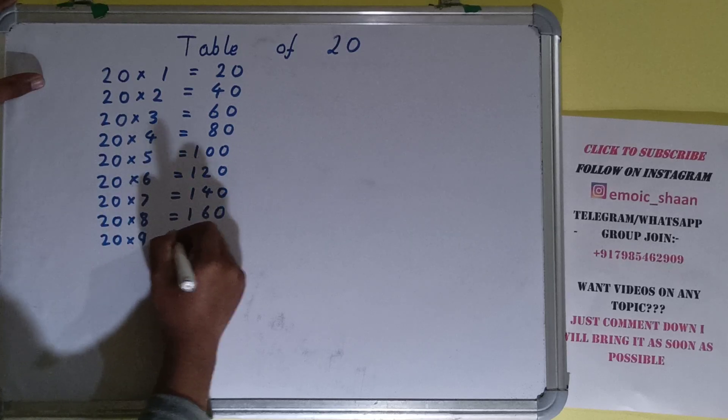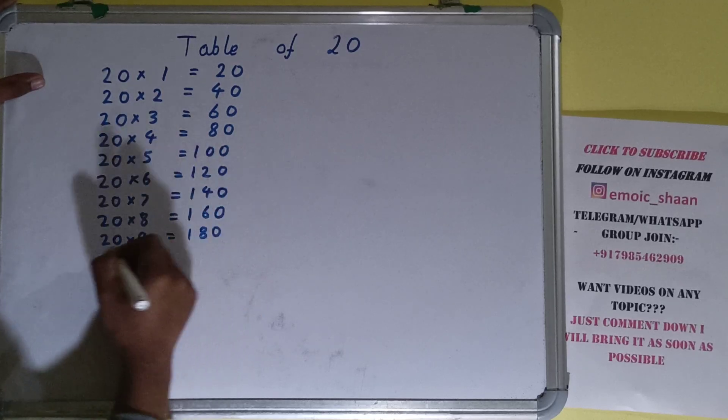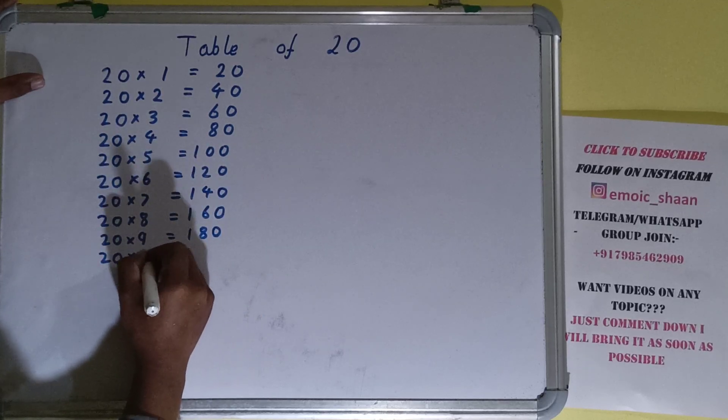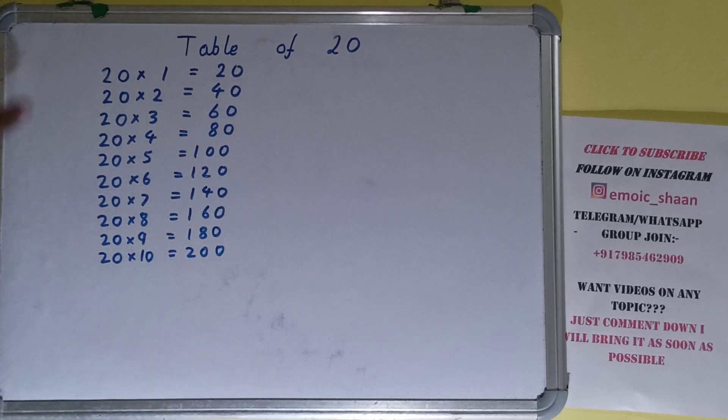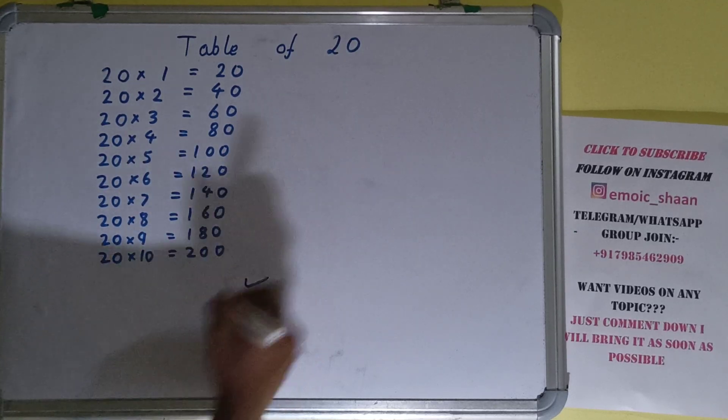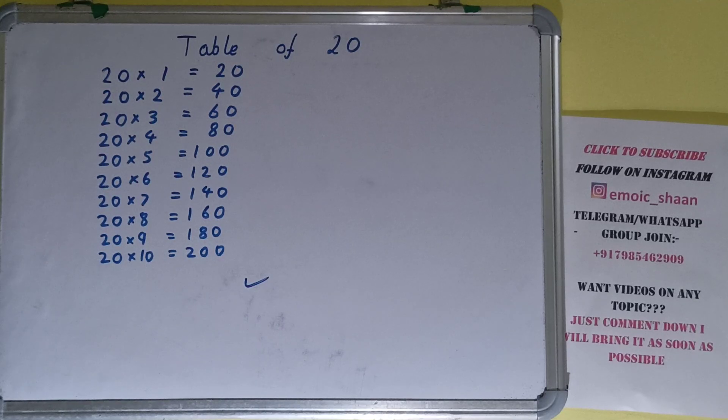20 into 9 is 180, and last 20 into 10 is 200. So that's the table of 20. If you found the video helpful, please hit the like button, consider subscribing, and thanks for watching.